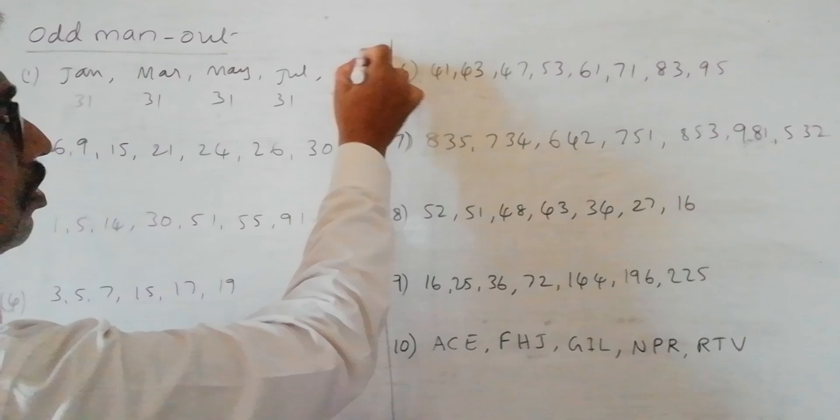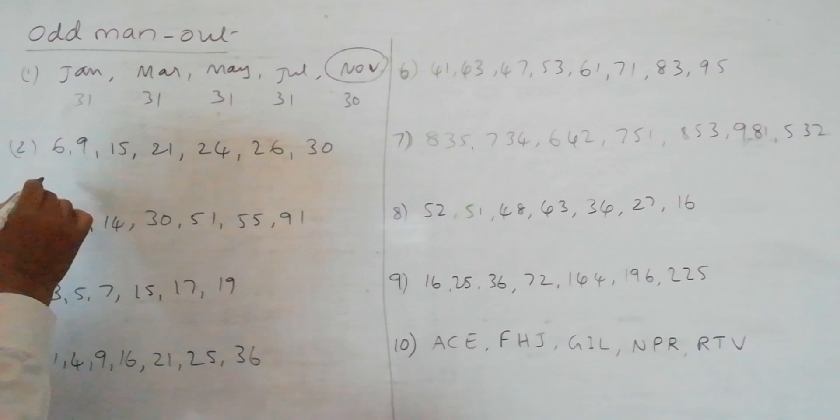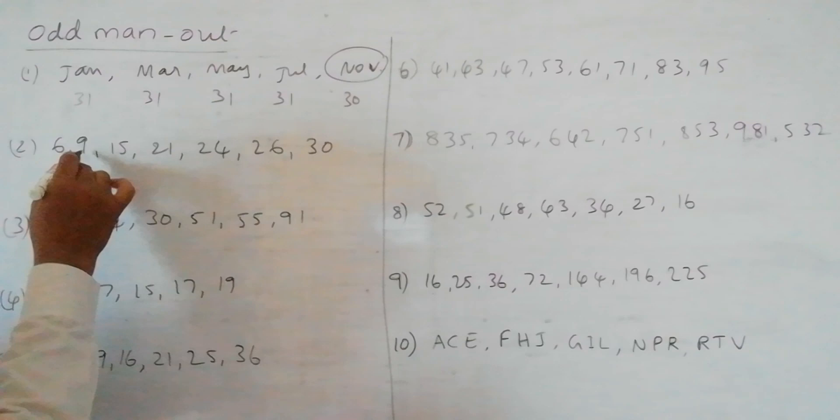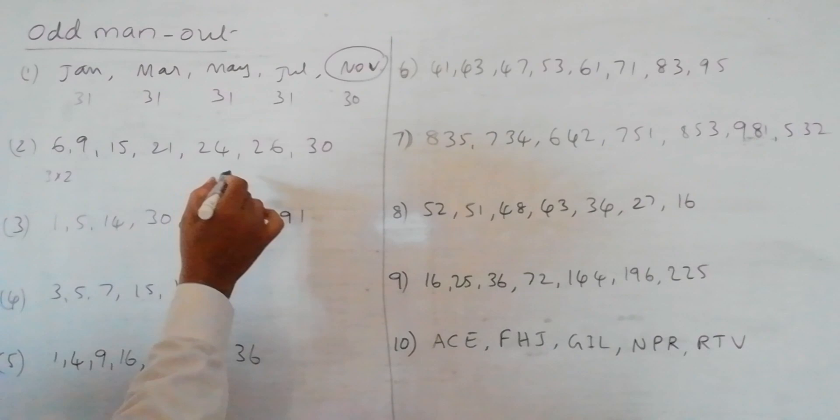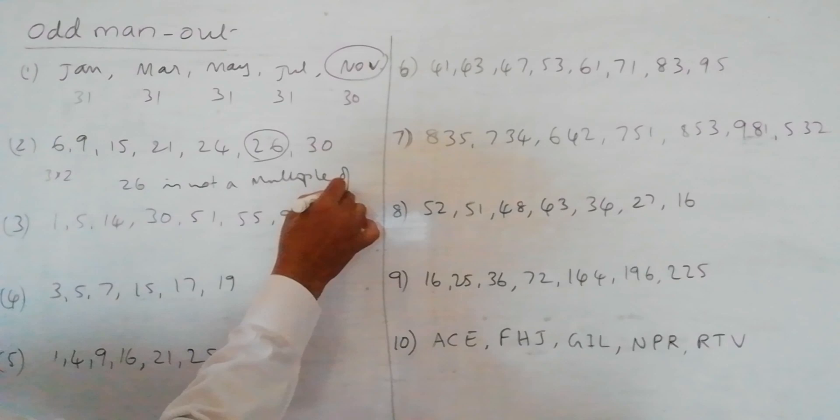Coming to the second problem we have the numbers 6, 9, 15, 21, 24, 26 and 30. If you observe these are all the multiples of 3. This is 3 into 2, 3 times 3 is 9, 3 times 5 is 15, 3 times 7 is 21, 3 times 8 is 24. But 26 will not be there in the multiples. 26 is not a multiple of 3. So except this number all remaining numbers are multiples of 3.